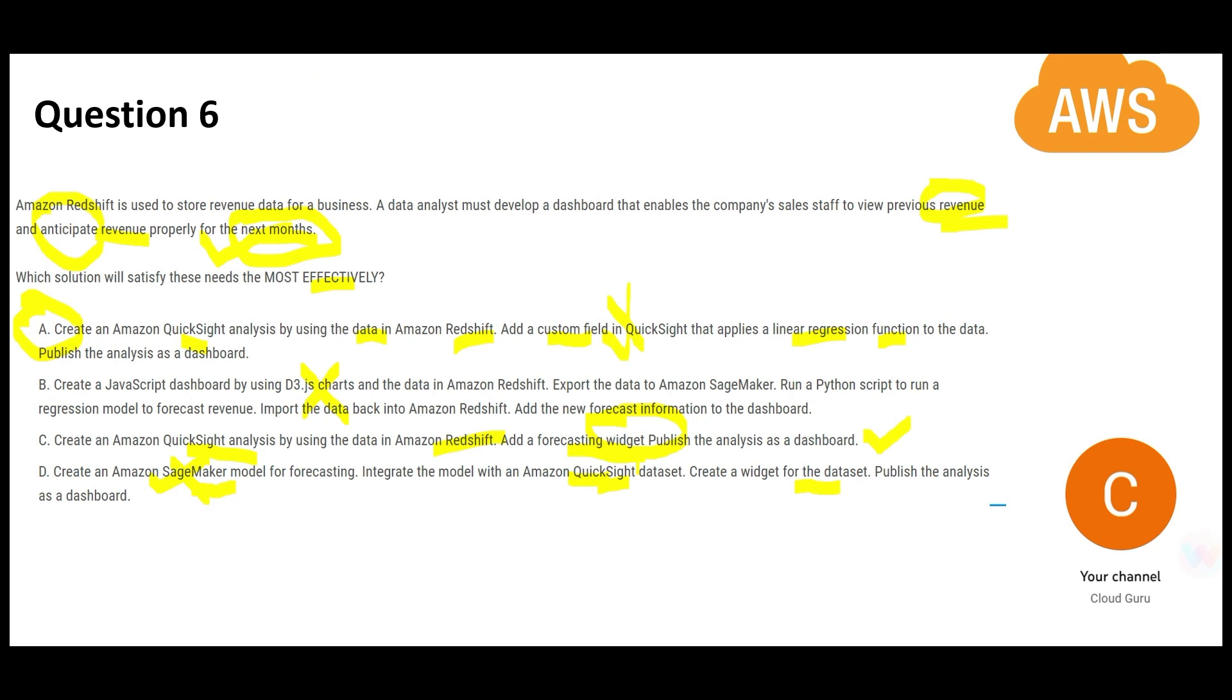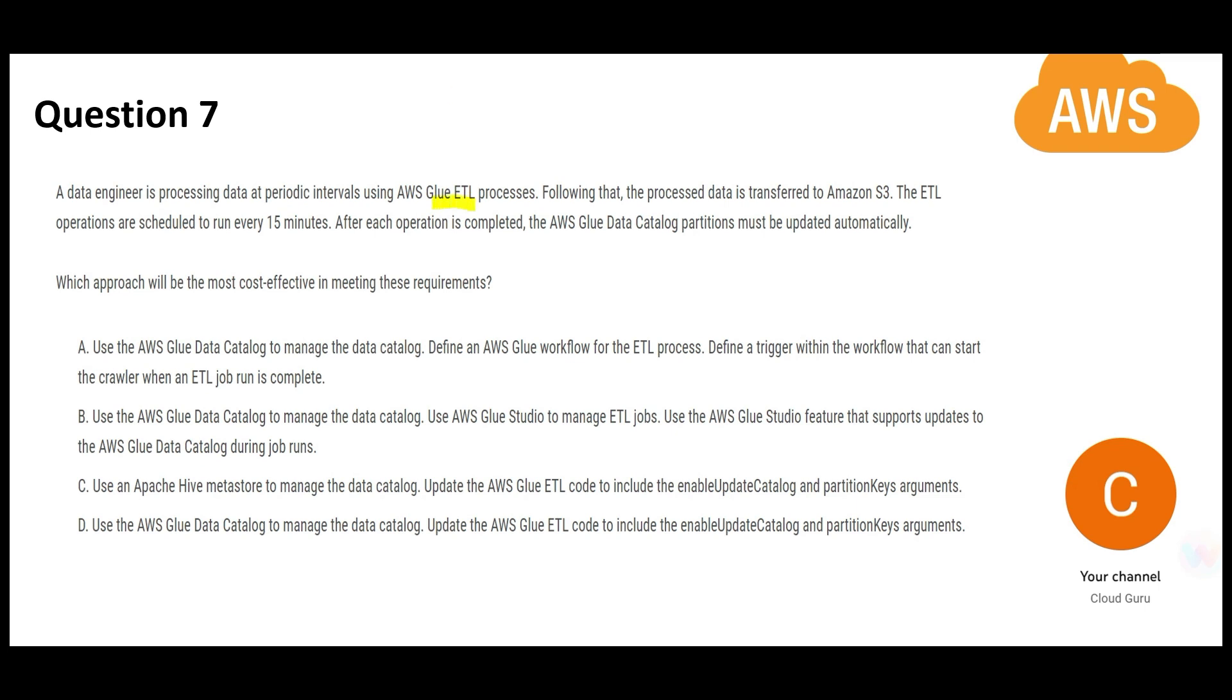So there is some data processing happening. The ask here is you want to create Glue data catalog partitions and update them automatically. Which one is most cost-effective? I will use simple logic: I want to address partitions. Where do I see partitions? I see here and here, so I will just strike out A and B—I do not see any solution given to address updating of the partitions.